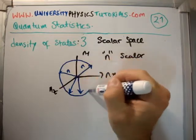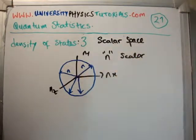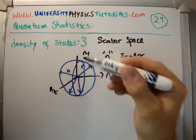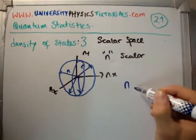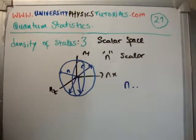So in two dimensions, they sweep out a circle. In three dimensions, of course, they sweep out a sphere. So all the number of states corresponding to a particular value of n in scalar space are on a sphere.